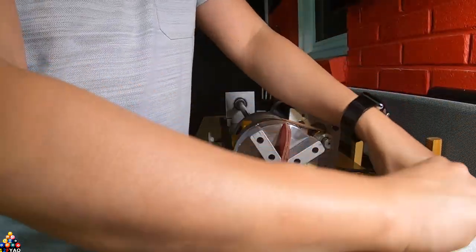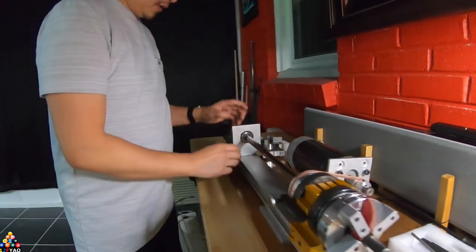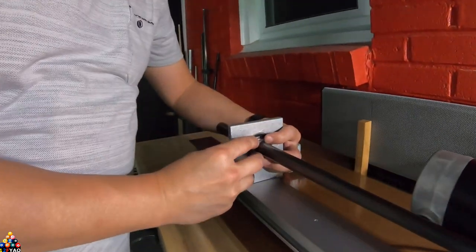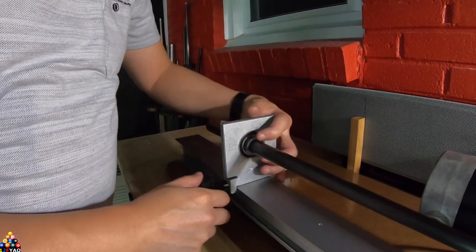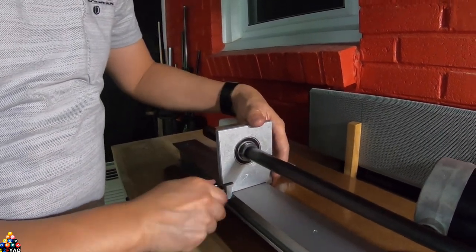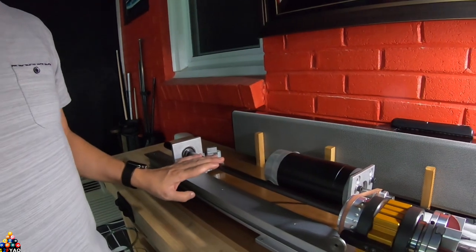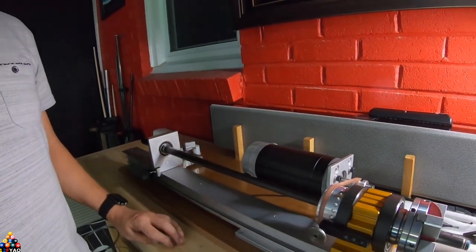Once that's firmly in place and it's not moving I will go to the steady rest and slide this back and once that's held firmly then I would lock it in the back. This steady rest will help the shaft from oscillating.